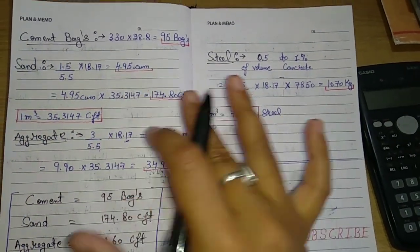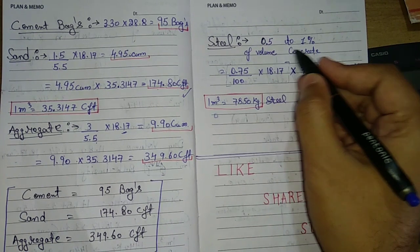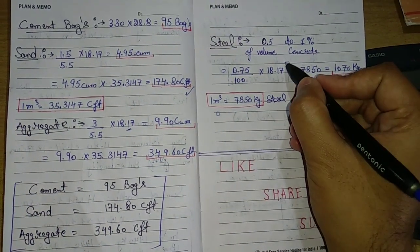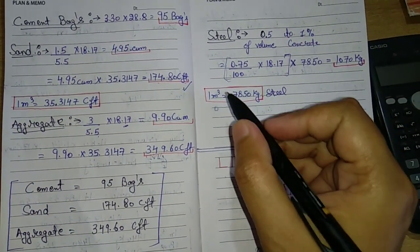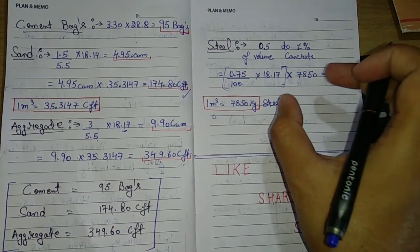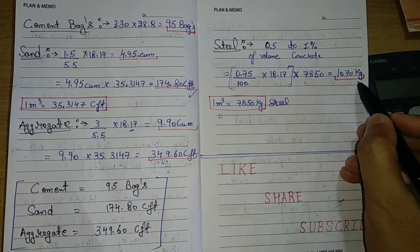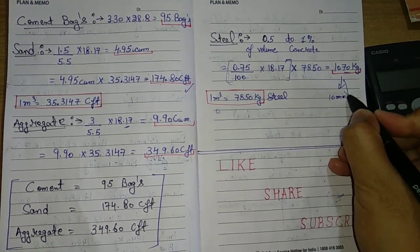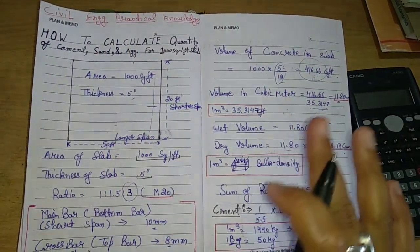For steel, we know the total volume of concrete is 18.17 cubic meters and steel percentage is typically 0.5–1%, so we use 0.75%. Therefore: (0.75 ÷ 100) × 18.17 × 1850 kg/m³ = approximately 1070 kg of steel requirement. We can further find the 10mm and 8mm bar quantities from this.